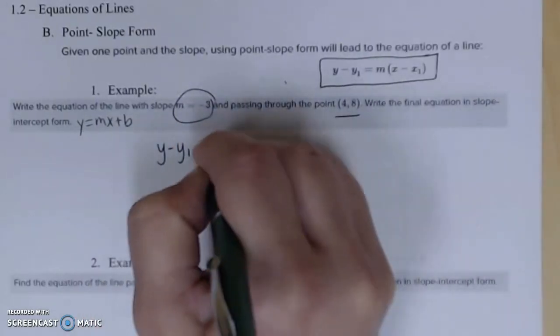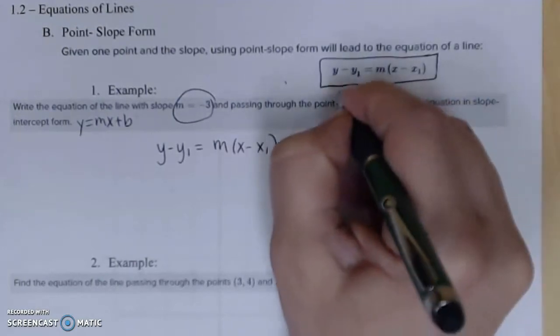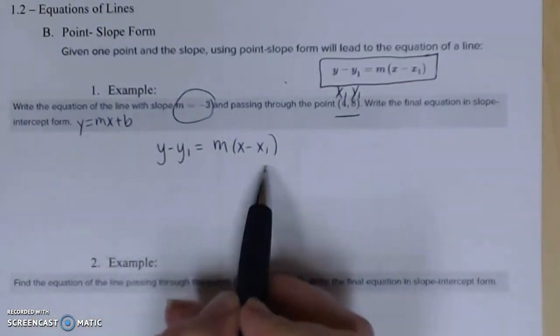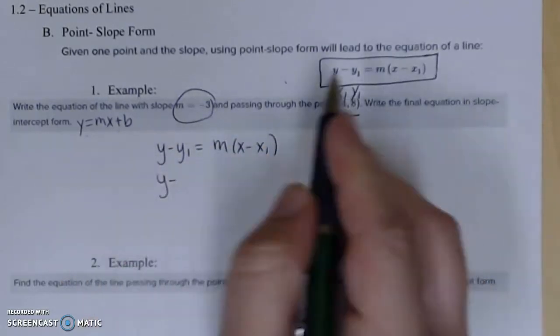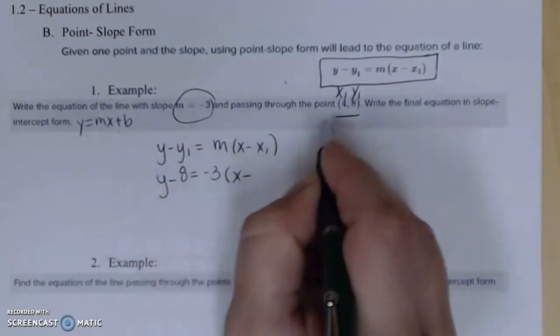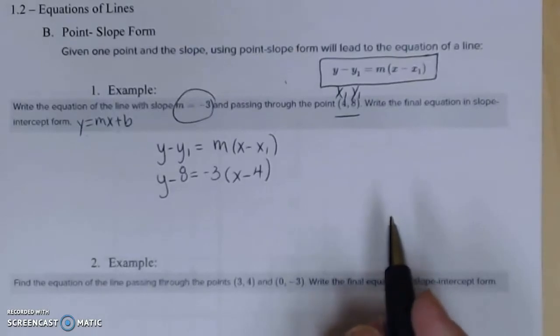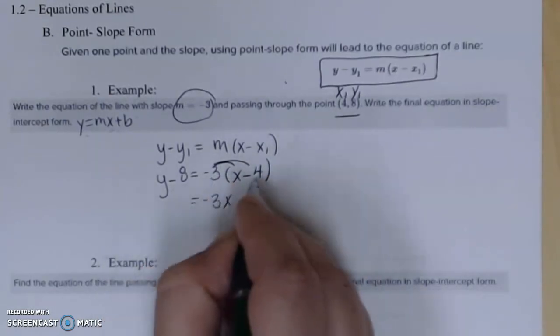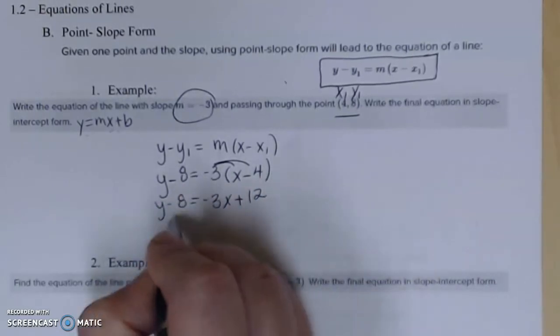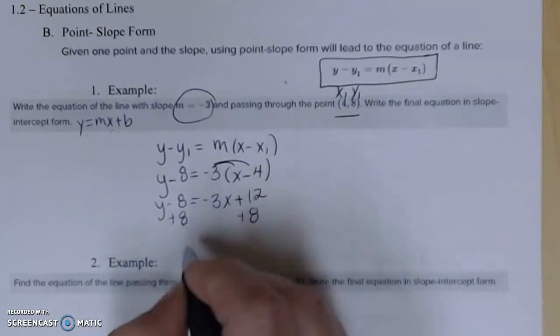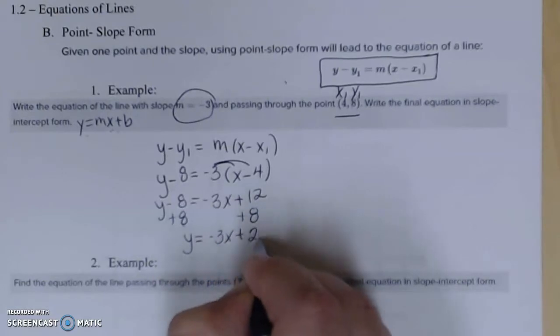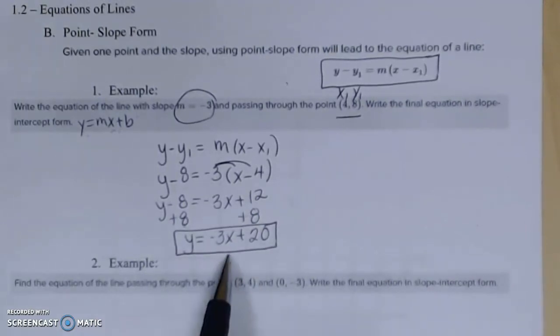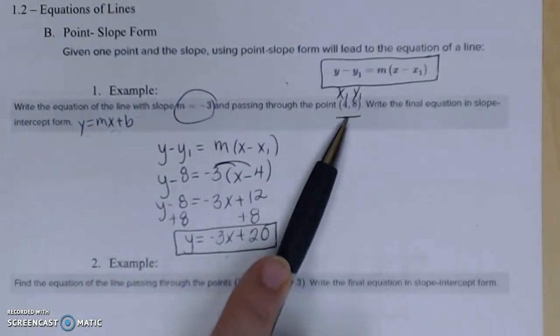As always, I'm going to write the formula I'm working with. Identify my variables: here's my x1, my y1. Our goal is to get an equation, so we'll leave these regular y and x, but fill in the other letters. So y minus 8 equals -3 times (x minus 4). Now I only have two more steps to get the equation in slope-intercept form. I'm going to distribute: -3 times x is -3x, -3 times -4 is +12. Bring down the left side, then move over this 8. Remember, opposite operation to cross the equal sign, so I get y equals -3x plus 20. Y is by itself, it's in y equals mx plus b form.